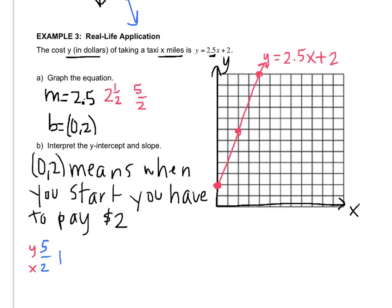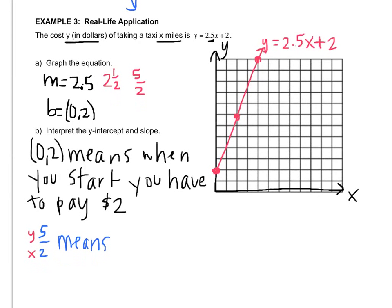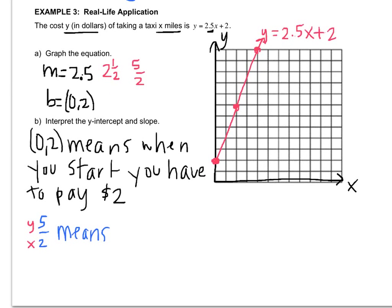So, that means 5 is y, so that represented dollars, and 2 is x, so that represented miles. So, that means you pay $5 every 2 miles.